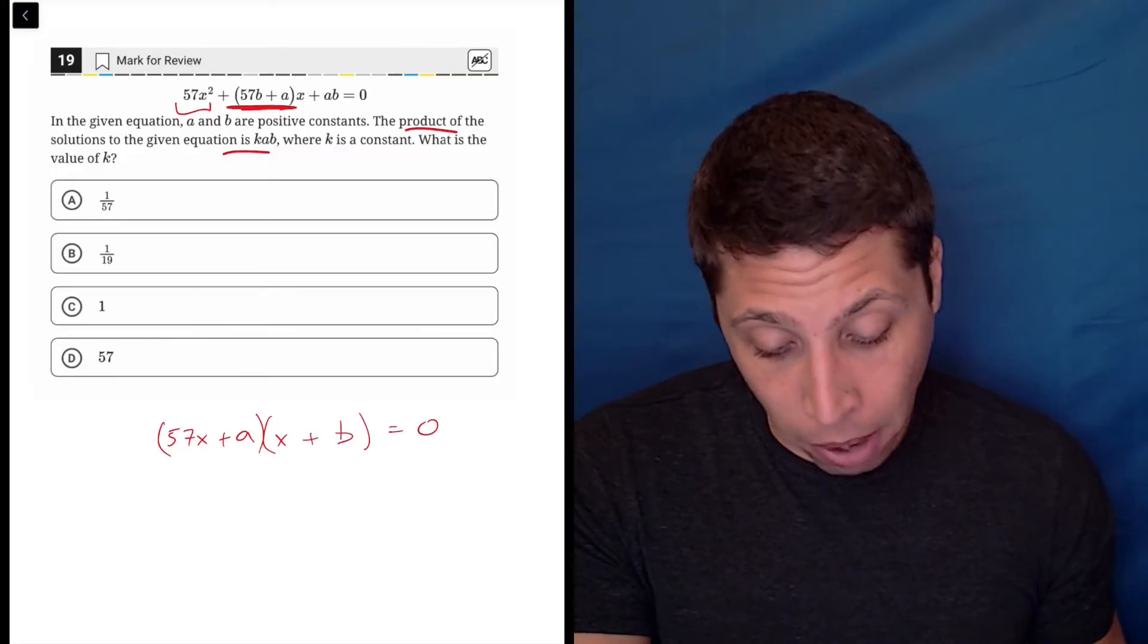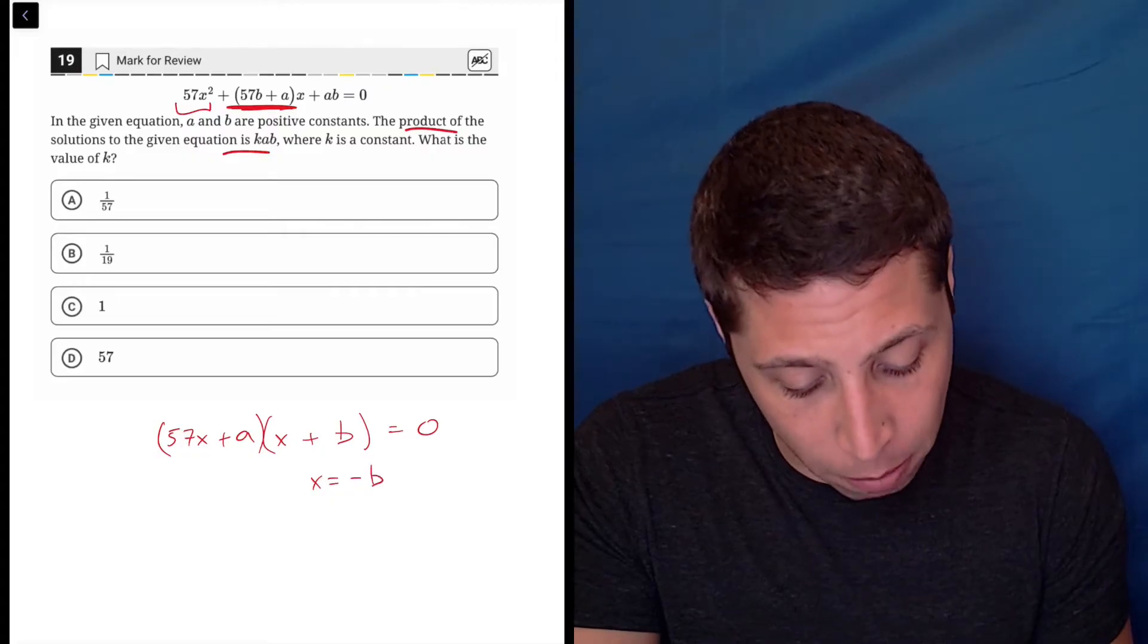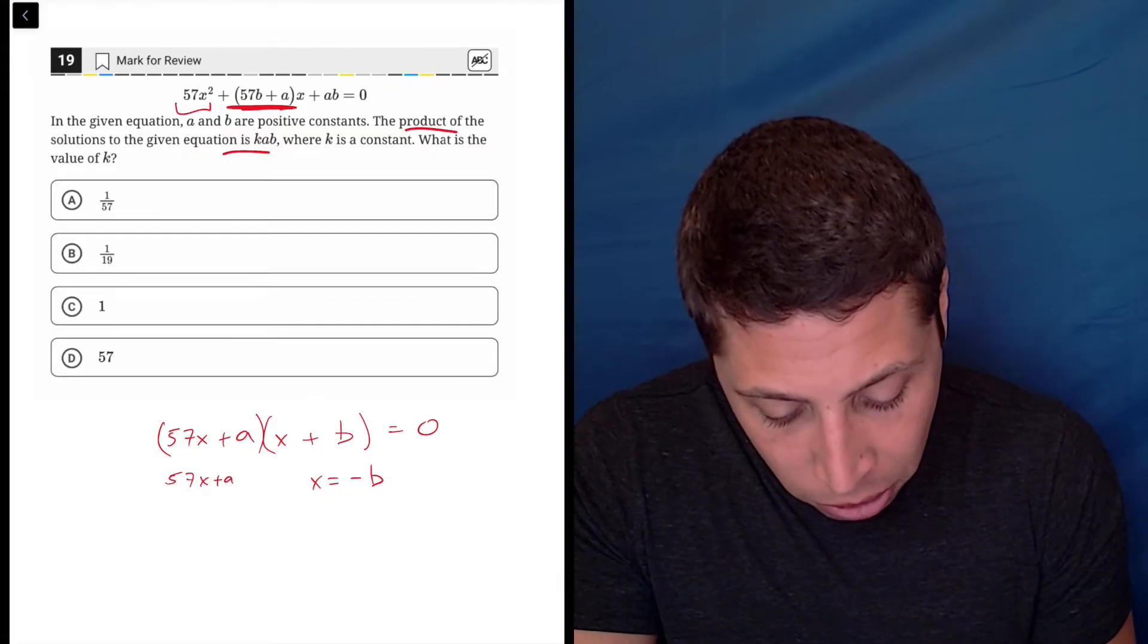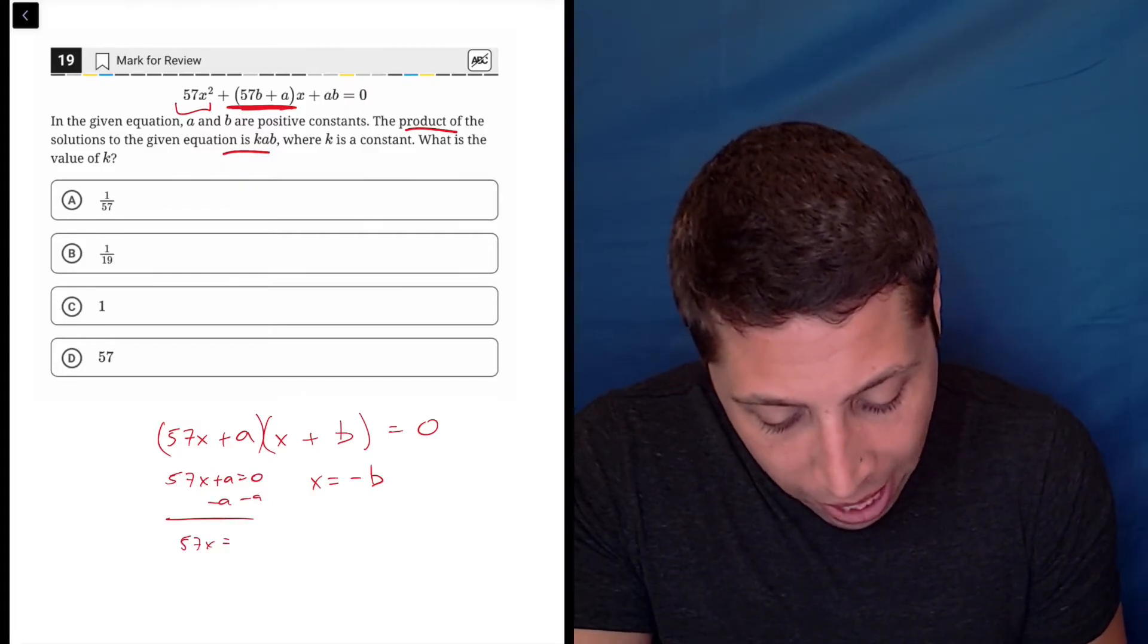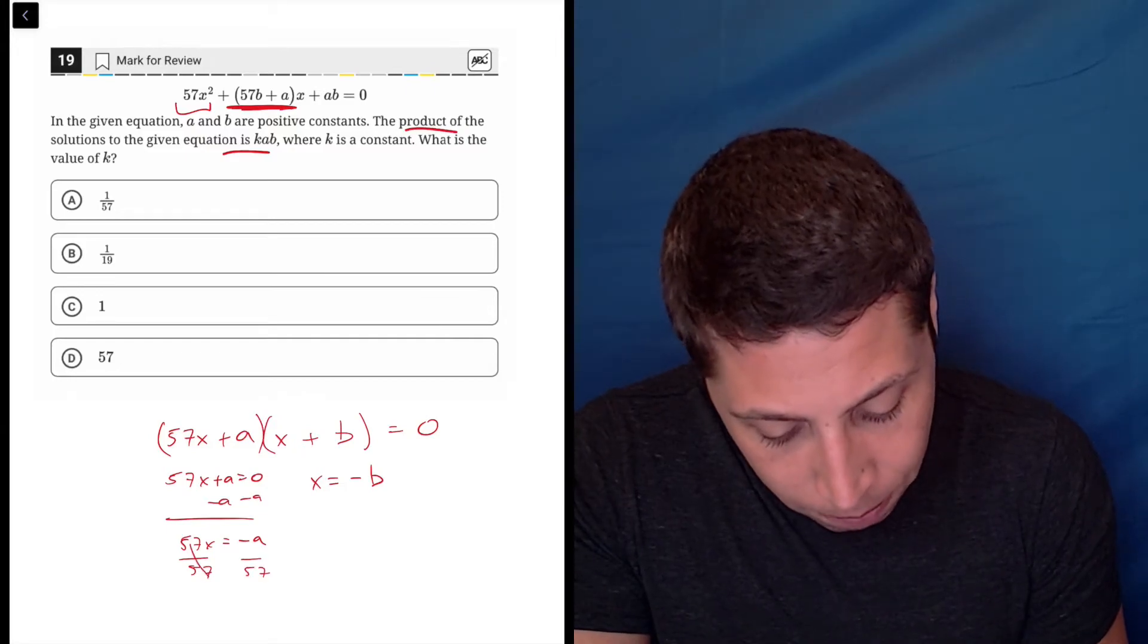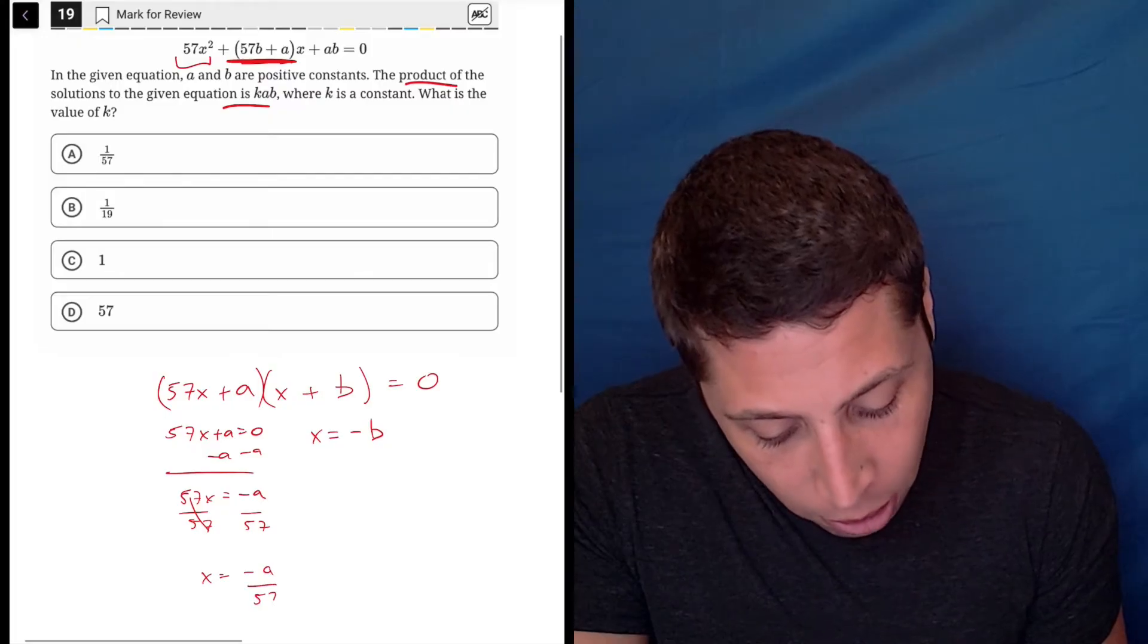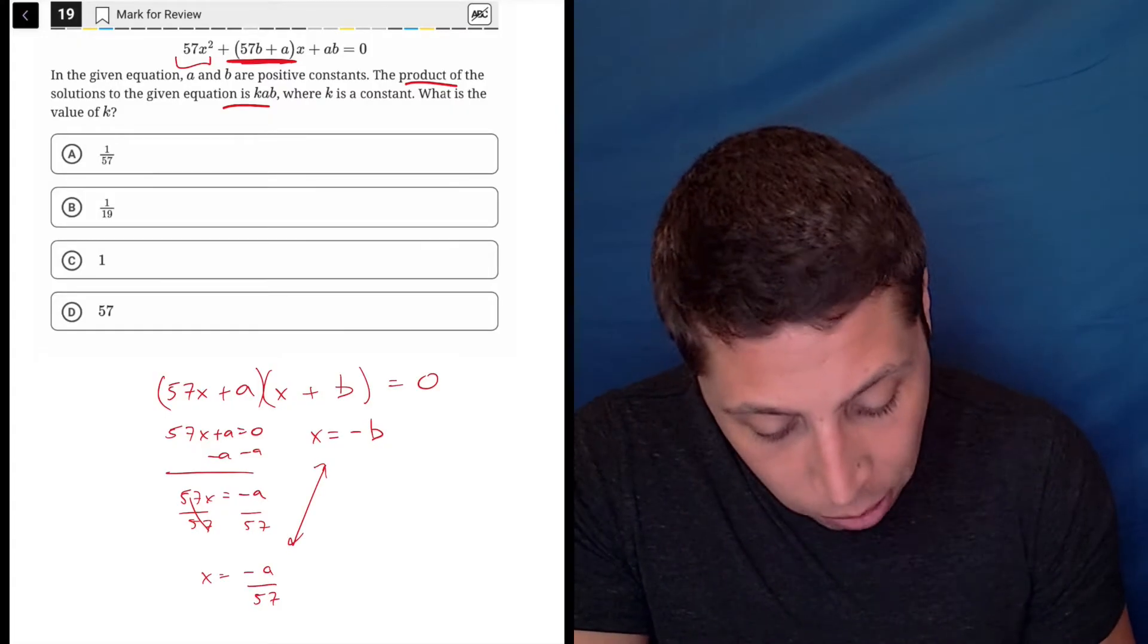So I was able to see all that. And then if they want the product of the solutions, well, the solutions, you would just set each of these equal to zero. So this one would be easy. That'd be negative b. And then this one maybe requires a little bit more algebra, so I'll show that to you. We would subtract a from both sides, we'd get 57x is equal to negative a, and we would divide by 57. So this one would be x is equal to negative a over 57. And if they're supposed to be the product of these two things, we multiply them.